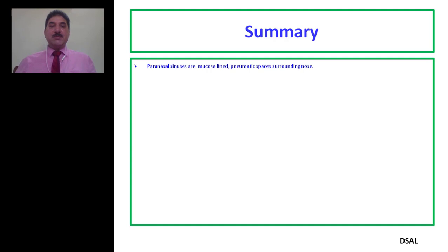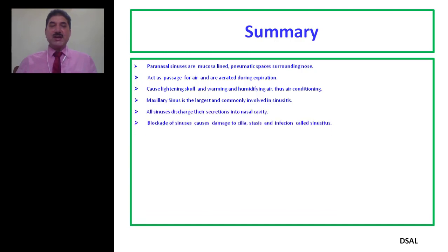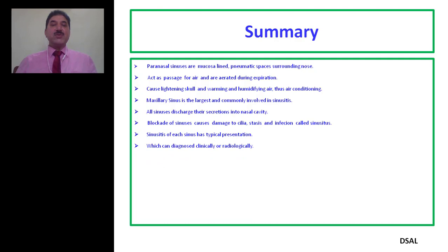To summarize: paranasal sinuses are pneumatic spaces surrounding the nose. These sinuses act as passages for air and are aerated during expiration — in contrast to the lungs, which get aerated during inspiration. They cause lightening of the skeleton, warming and humidifying of air, thus conditioning inspired air. The maxillary sinus is the largest and most commonly involved in sinusitis. All sinuses discharge their secretion into the nasal cavity. Blockade of the sinuses causes damage to the cilia, stasis, infection, and sinusitis. Sinusitis has typical presentations that can be diagnosed clinically or by radiological examination. Anatomical knowledge guides the surgical approach to various sinuses.